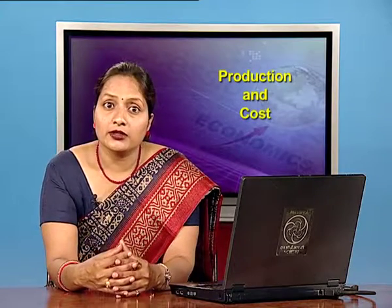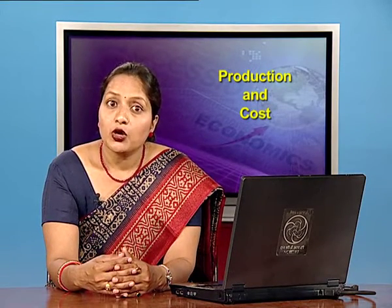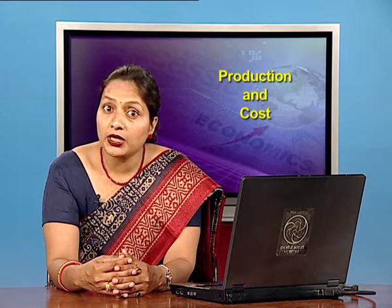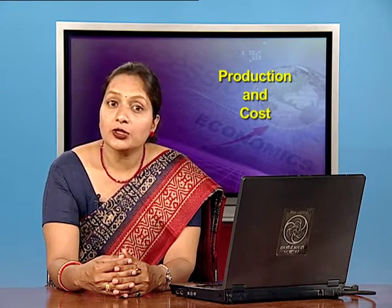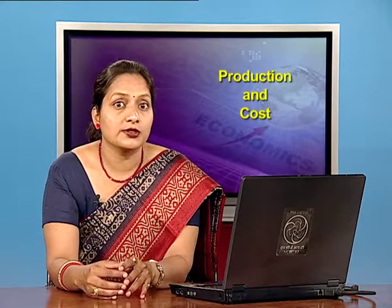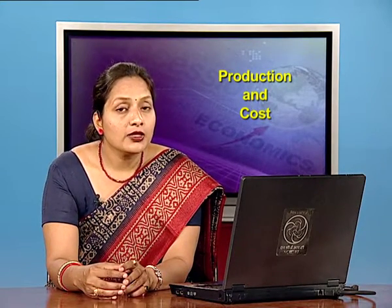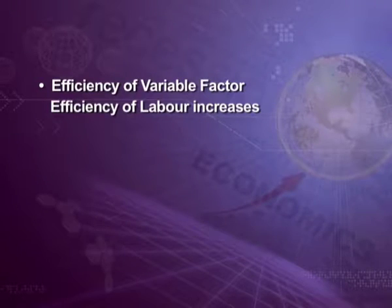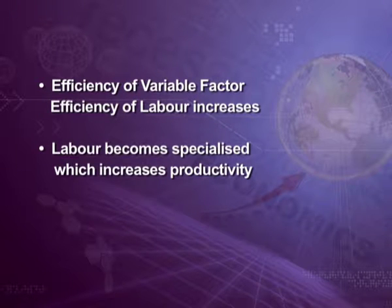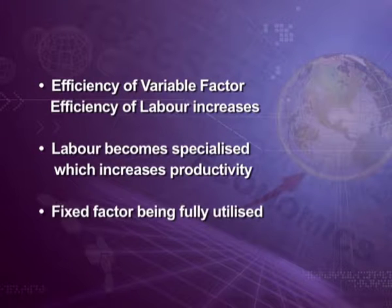It is to be noted that the marginal product, although it starts declining, remains greater than the average product throughout the stage, so that average product continues to rise. The reasons behind this stage are: first, efficiency of variable factor, that is efficiency of labour, increases; second, labour becomes specialised which increases its productivity; third, fixed factor capital is being fully utilised.